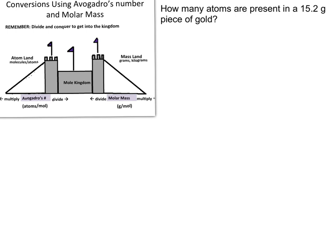And what one needs to understand is that we cannot directly convert between mass and atoms. So in order to convert from one side of the flowchart onto the other, you must go through the kingdom. So it will always be a multi-step process in order to do this conversion type.